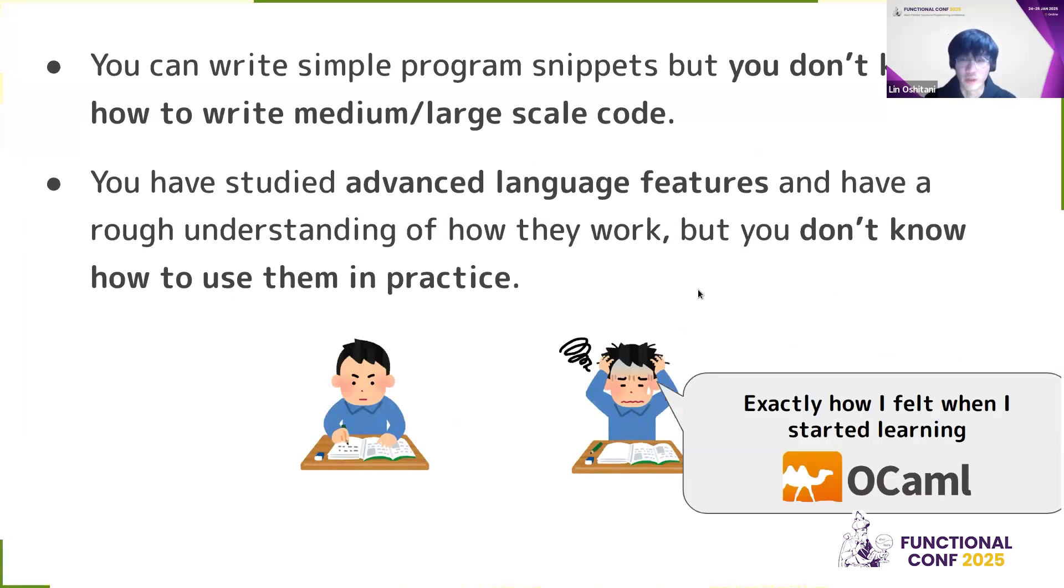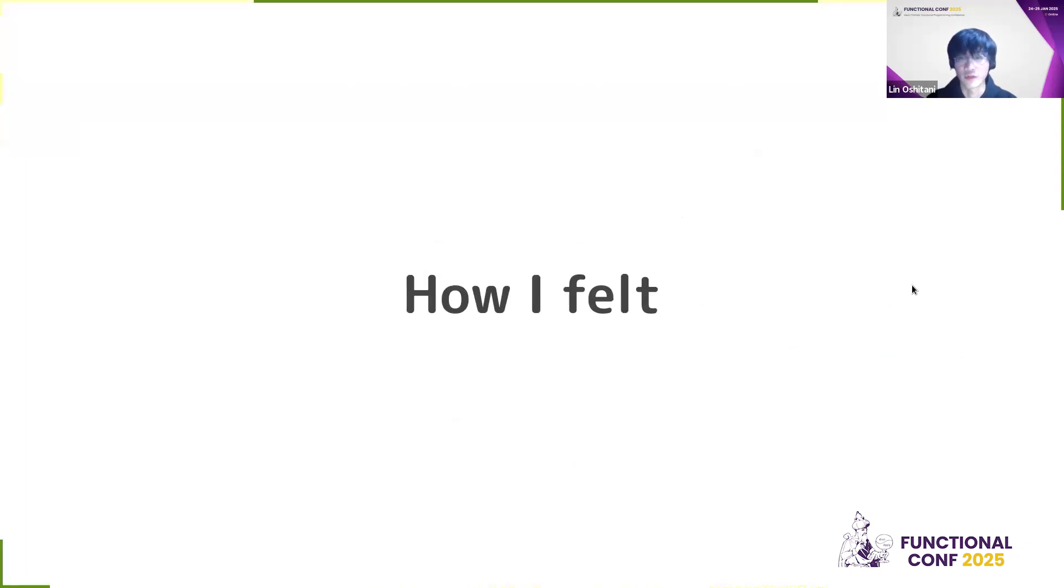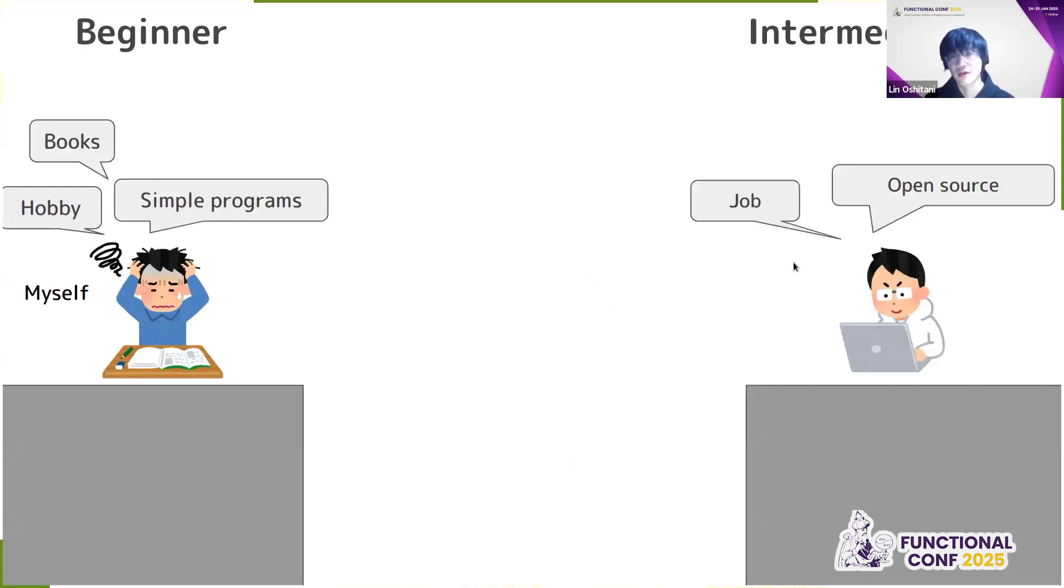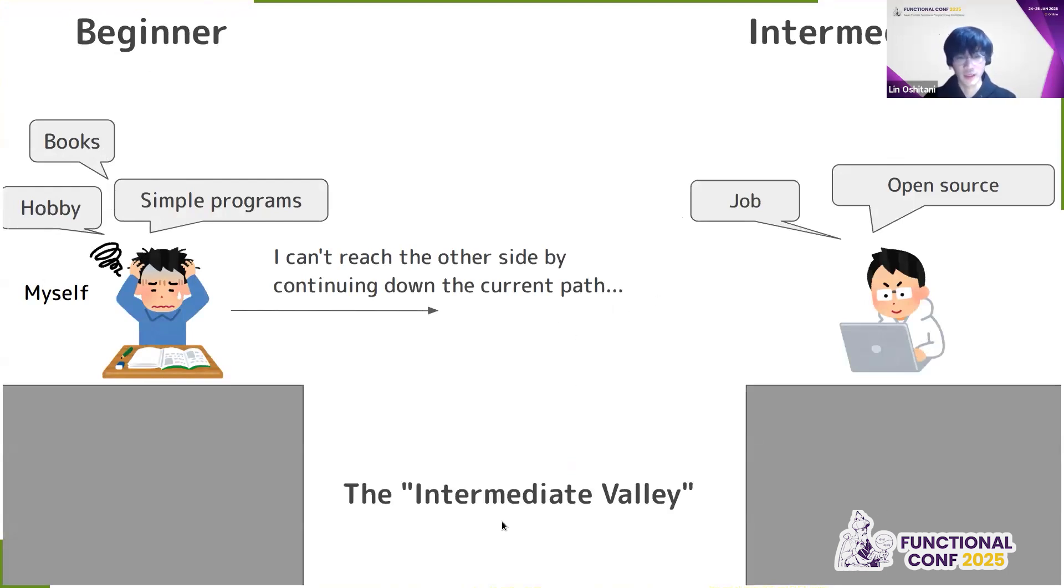This is exactly how I felt when I started learning OCaml. Here's me as a beginner, reading books, writing OCaml as a hobby and running very simple programs. Then I look around and see these intermediary to pro people who are writing OCaml as a job and contributing to open source software. And I felt like I can't reach the other side by continuing down the current path. So this gap, I call the intermediate valley.